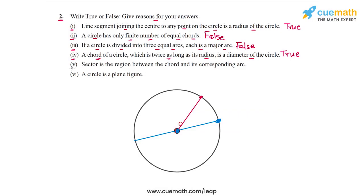Now, in part five, the statement says that a sector is the region between the chord and its corresponding arc. So in this circle, let me draw any chord. So let's take this chord. And the corresponding arc of this chord would be this arc here, right? And now basically, the statement says that the region between the chord and the arc is the sector. So if we take this region, this is the sector. But this is not true, because this region is actually called segment, not sector.